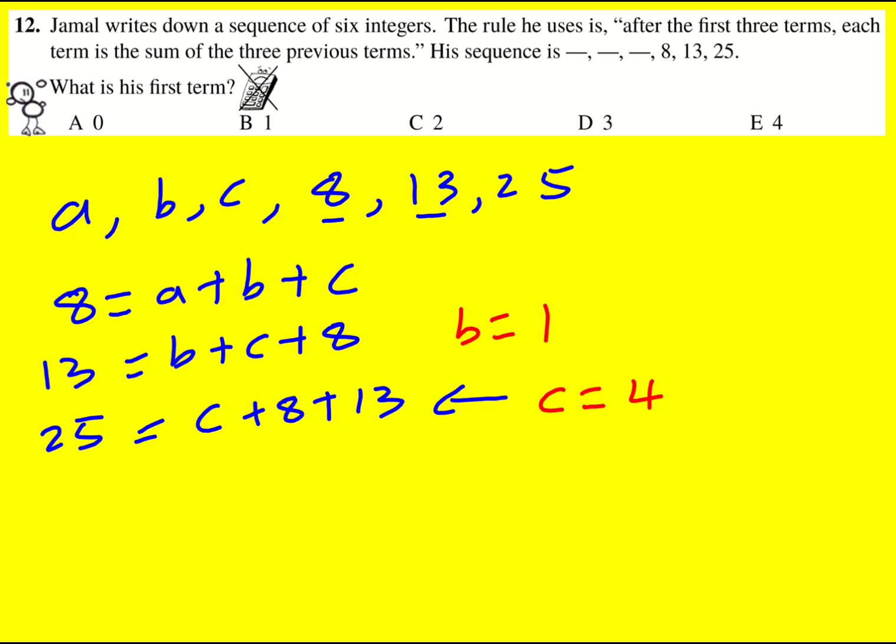Now for the first term, well actually I've got 8 is equal to, this is going to be 5. So 8, now a is going to be 8 minus 5, it's got to be 3.